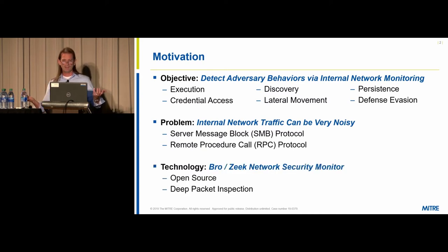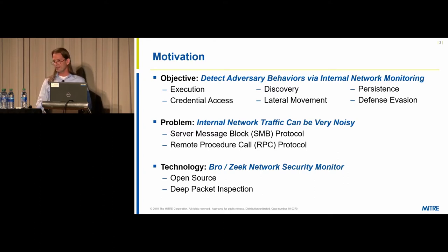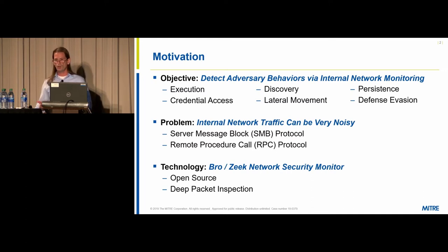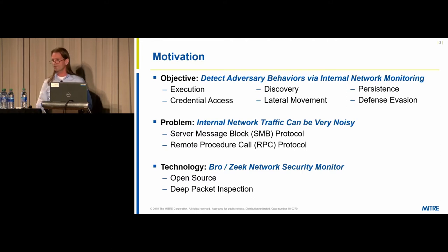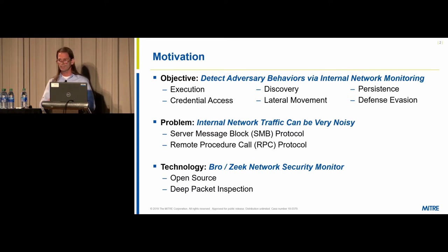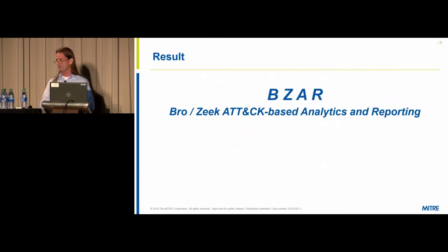The technology I chose is Bro — when I started the project in early 2018 it was still called Bro, and has since transitioned to the Zeek Network Security Monitor. There were a couple of key advantages: it's open source, so if I needed a function that Zeek didn't already do, I could write it and build it into my instance of Zeek. Also, it offers deep packet inspection particularly for SMB and RPC, which was a very powerful starting point for this project.